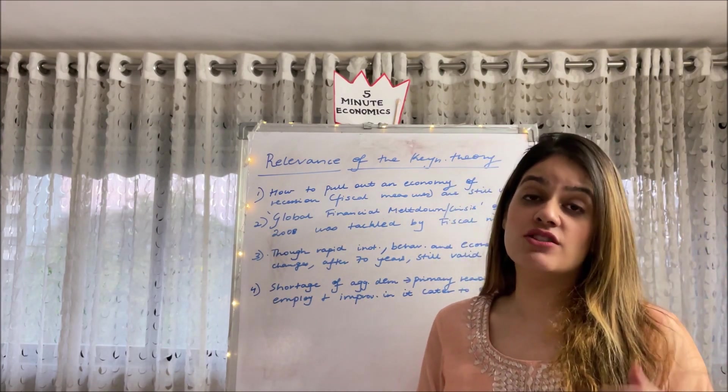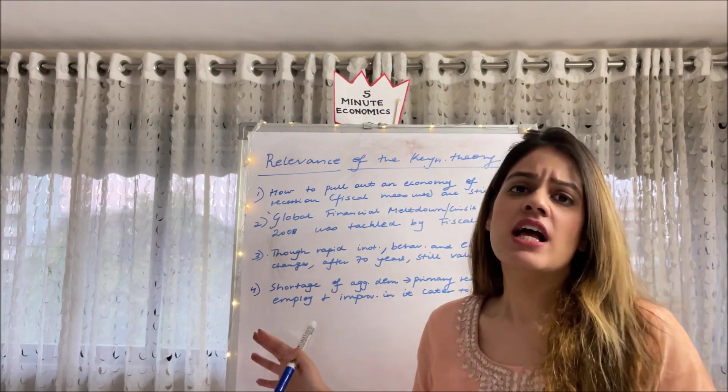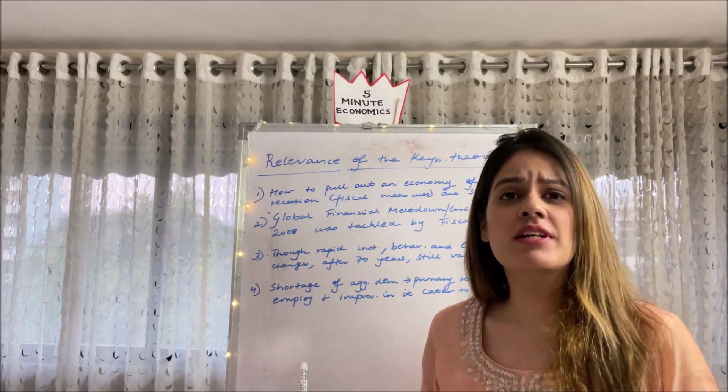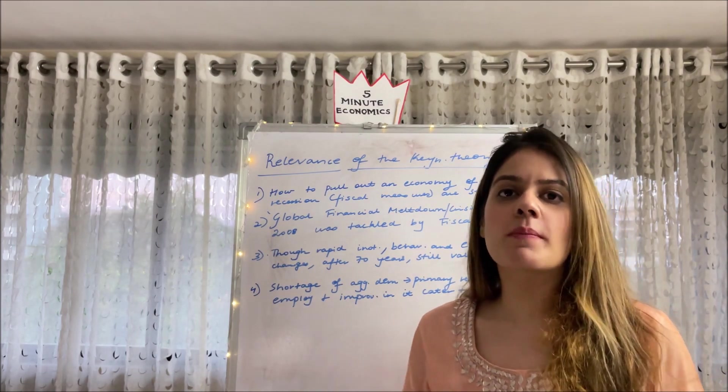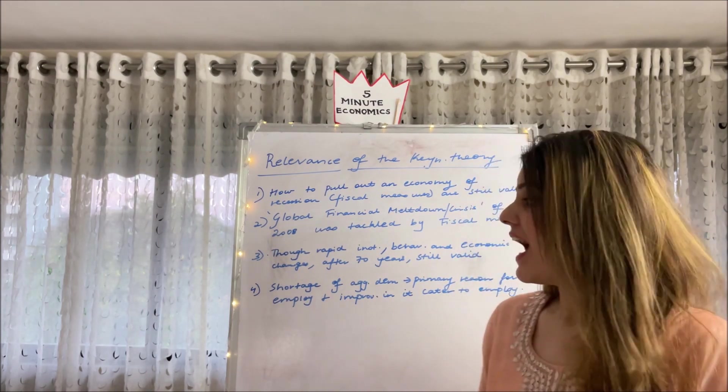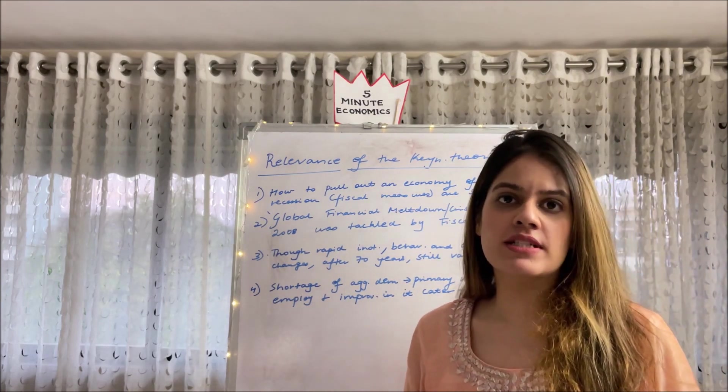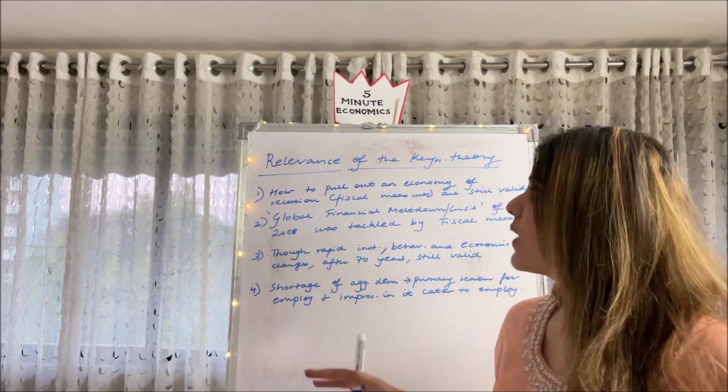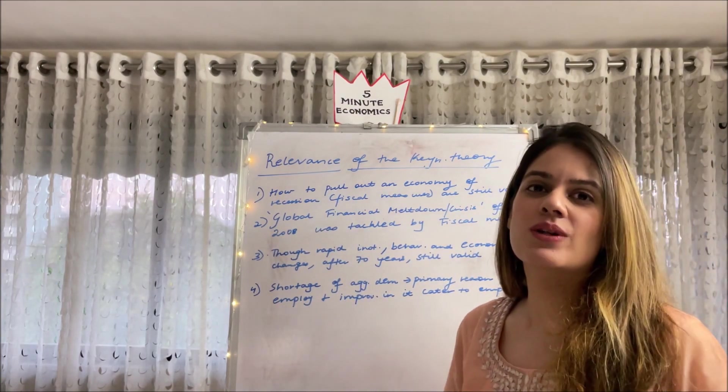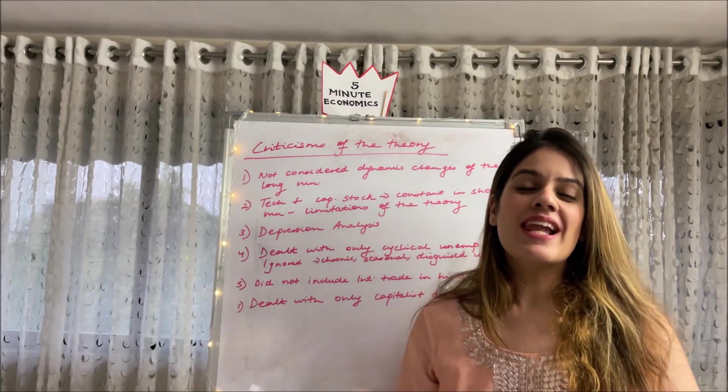Thirdly, though rapid institutional, behavioral, economical, a lot of changes have happened in these 70 years, still his analysis remains valid. And lastly, the shortages of aggregate demand remains the primary reason which was advocated back then by Keynes as the reason for unemployment, and to improve the employment, whatever Keynes has suggested still remains valid. So that is why this theory still holds some validation.